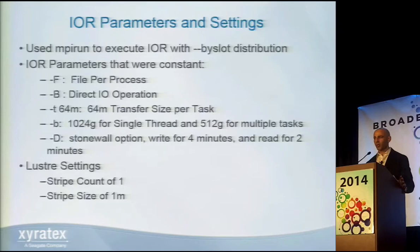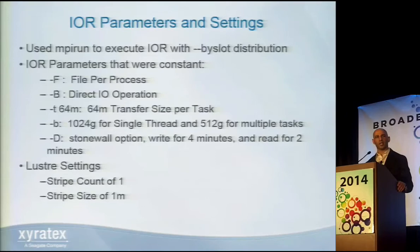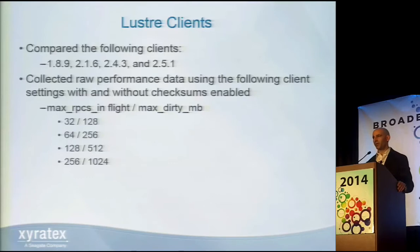I used a really large block size per task because I wanted to use the stonewall option — writing for four minutes, then reading for two minutes. The Lustre settings for the output data were a stripe count of one and a stripe size of one megabyte. The four client versions I compared were 1.8.9, 2.1.6, 2.4.3, and 2.5.1.